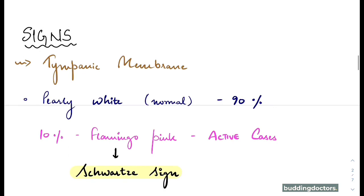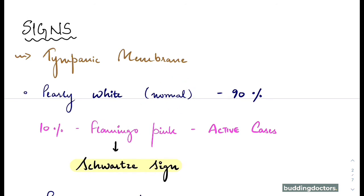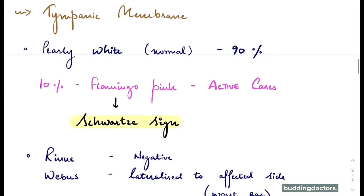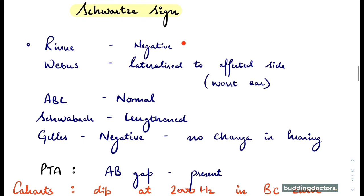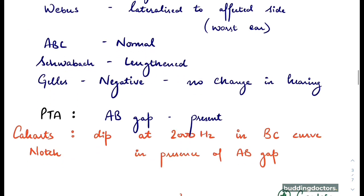Regarding the signs: the tympanic membrane normally appears pearly white, but in 10% of active cases we can see the flamingo pink sign, also known as Schwartze's sign, due to mucoperiosteum vascularity. Rinne's test will be negative since bone conduction is better than air conduction. Weber's is lateralized to the affected ear. Absolute bone conduction is normal, Schwabach is lengthened, and Gelle's test is negative with no change in hearing.